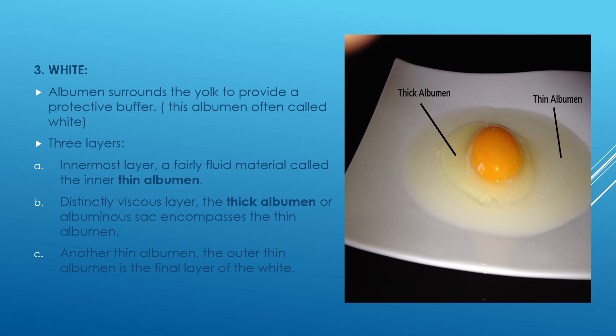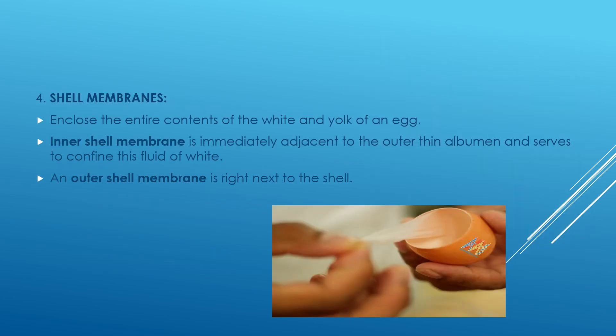White albumin surrounds the yolk to provide a protective buffer. There are three layers: a thin layer, a thick layer, and another final layer that protects the whole egg. The innermost layer is fairly fluid material, visible as a thin layer in the picture. The viscous layer is the thick albumin that encompasses the thin albumin. The thick and thin albumin are clearly visible in a raw egg.